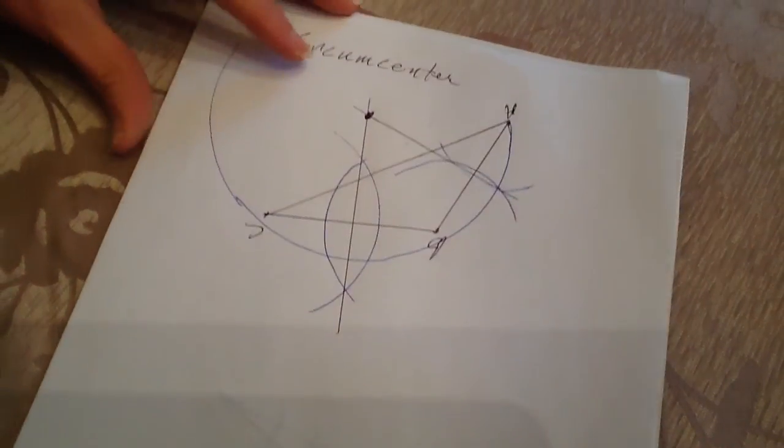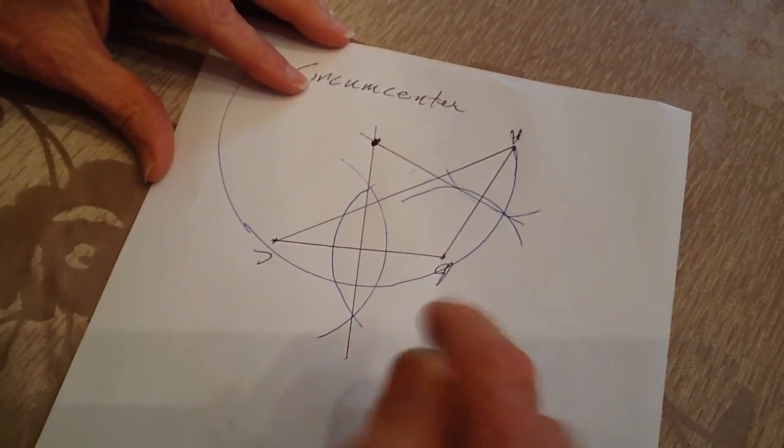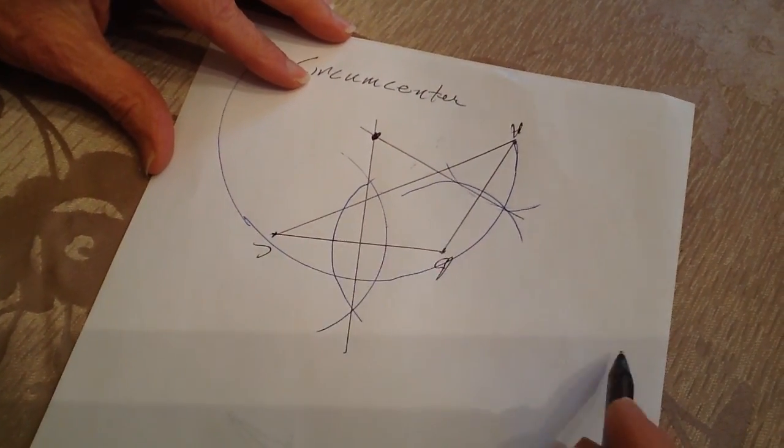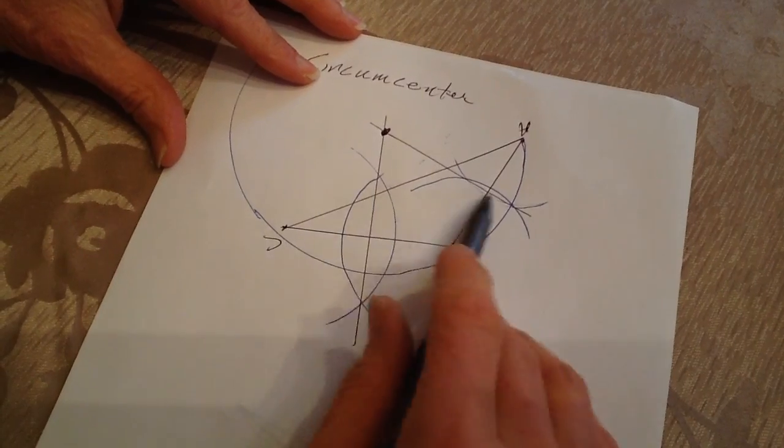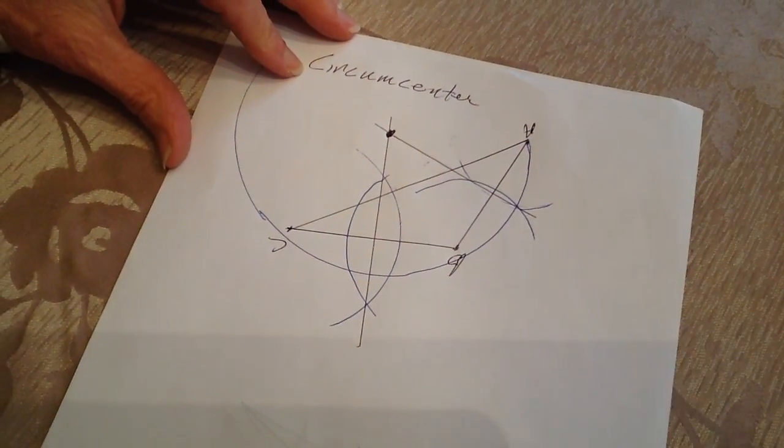So the circumcenter does have utility. And then again, it's where the perpendicular bisectors intersect, and that is that point of concurrency. Thank you.